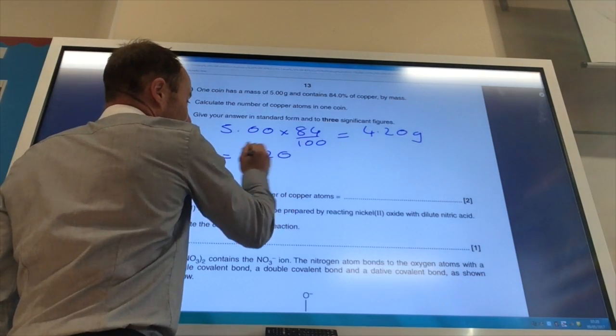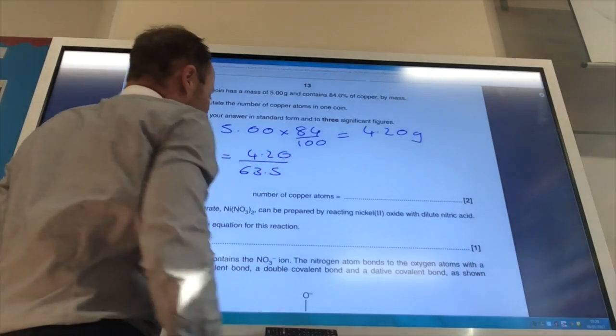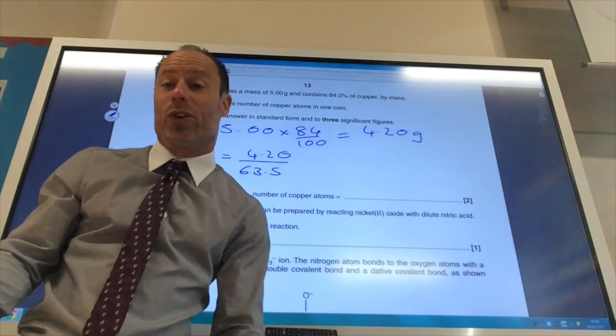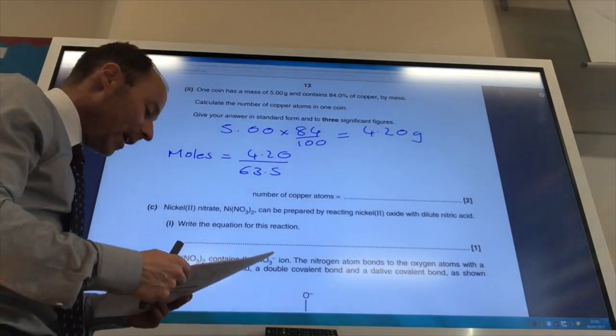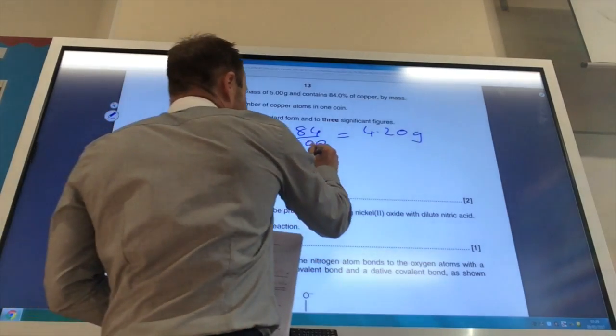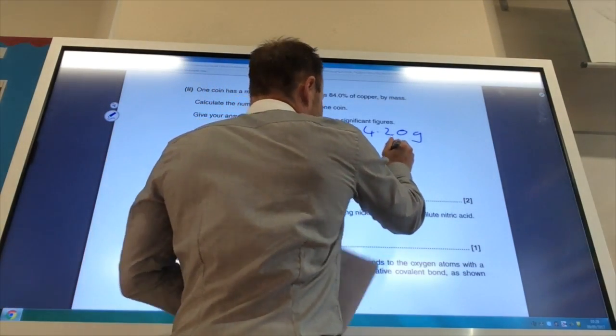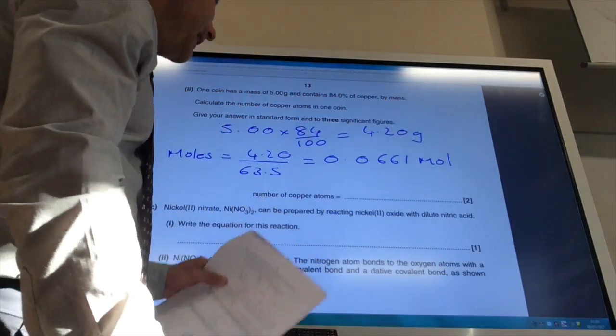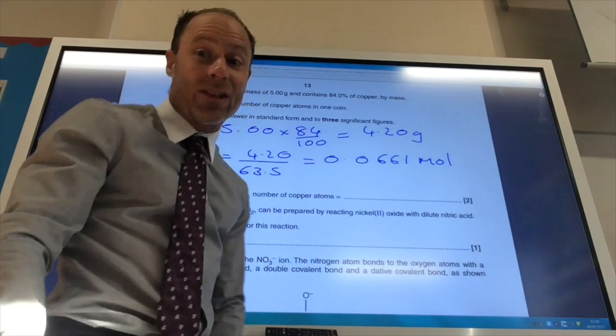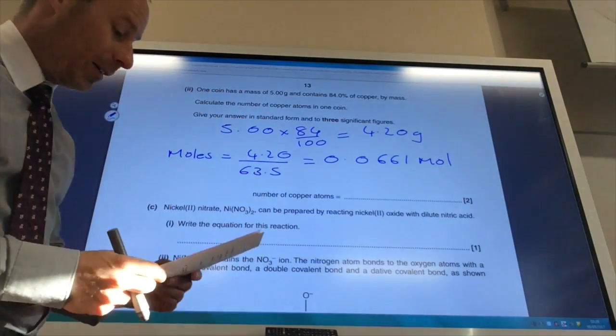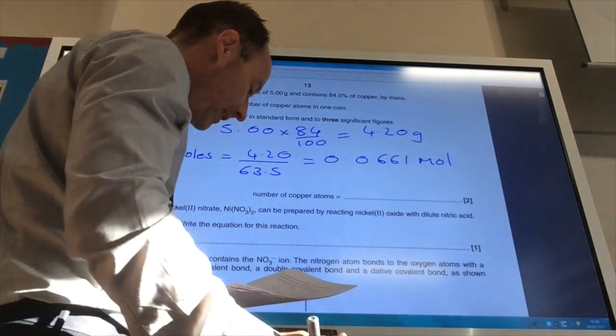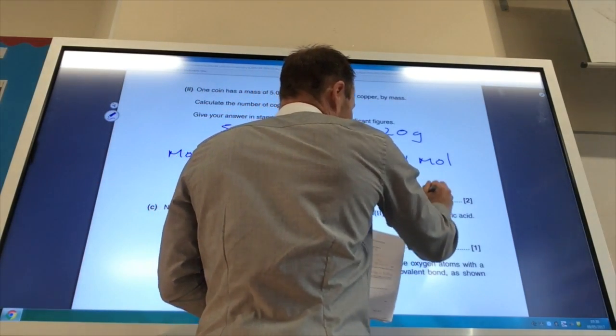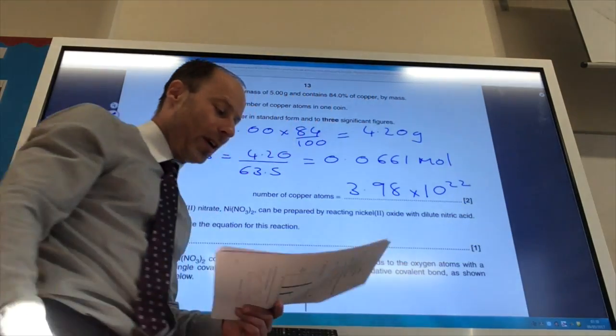You then need to find your moles of copper atoms. So moles is going to equal the mass divided by the relative atomic mass. It doesn't matter if you use the answer from the previous question, or you look this up at the periodic table. I'm going to use the one on the periodic table. That gives you 0.0661 mole. And then finally, you need to times that number by Avogadro's constant, which is on your data sheet. And if you do that, you get the answer to 3.98 times 10 to the 22 atoms.